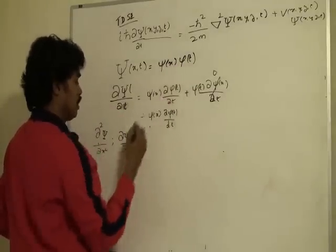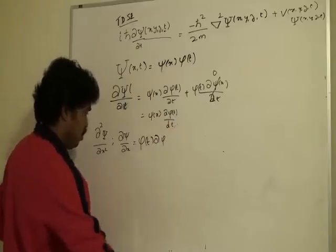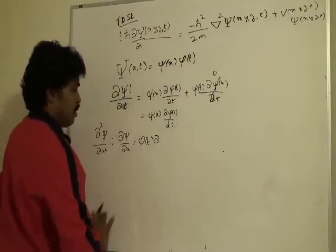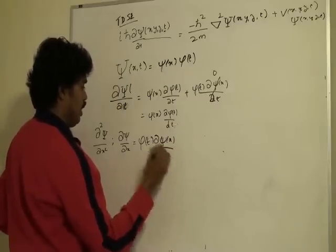So we will keep this constant φ of t and it is ∂ψ of x by ∂x.